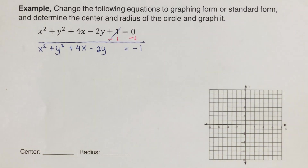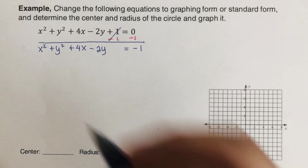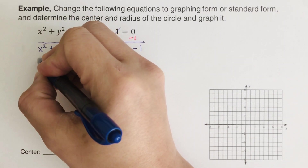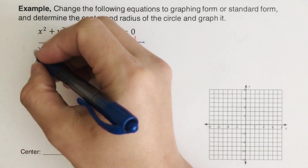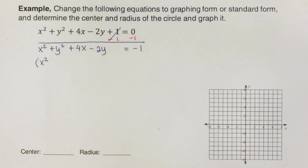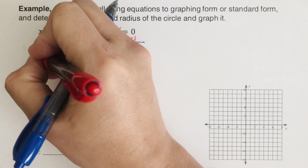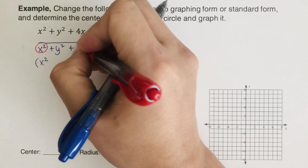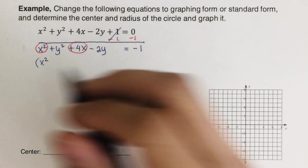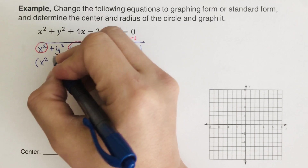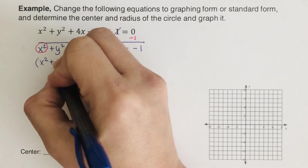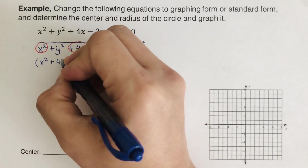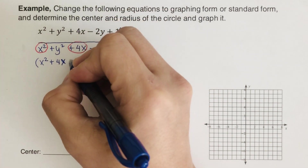The next step is to group together all the x terms — anything that has an x, whether x squared or x. So we group them: x squared plus 4x.